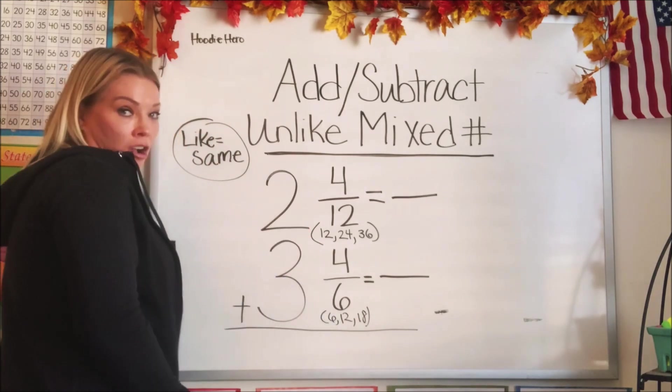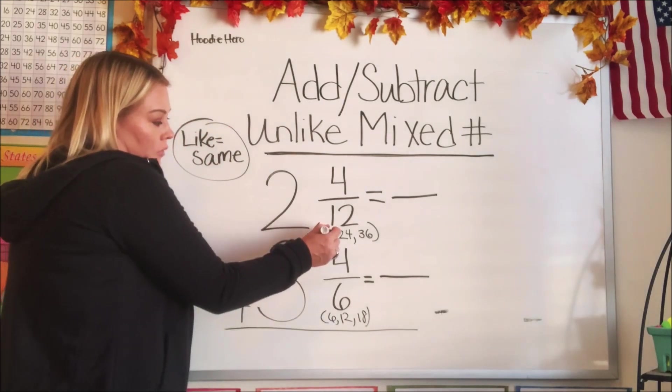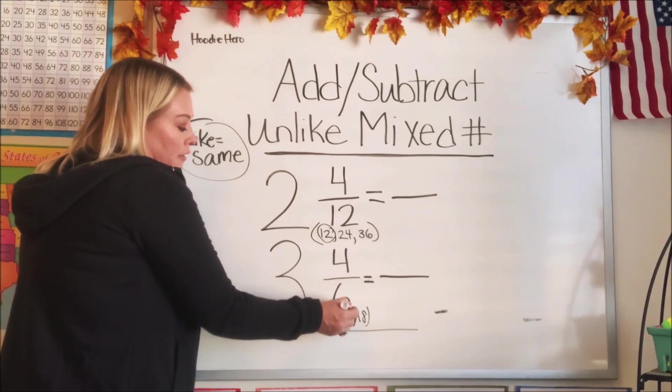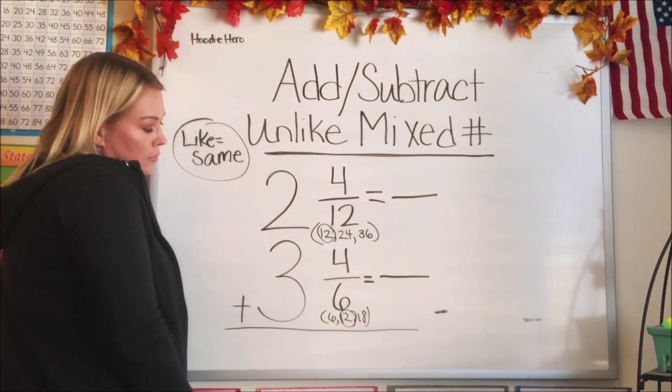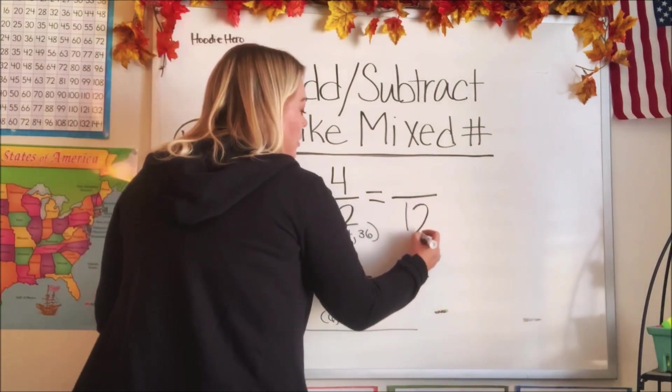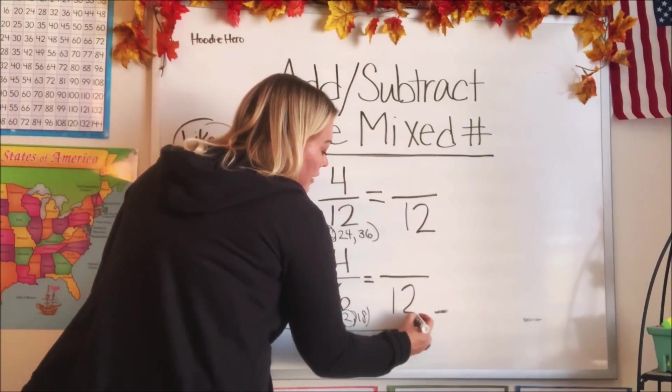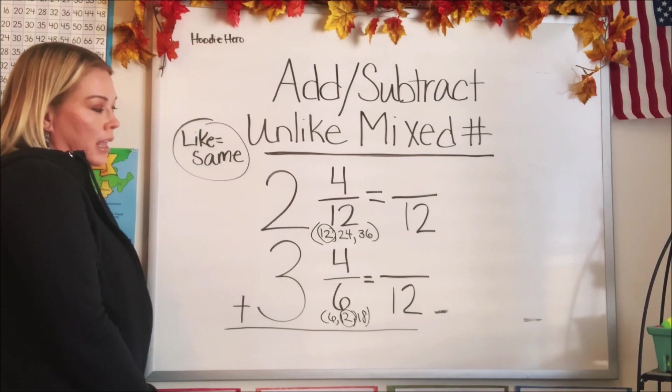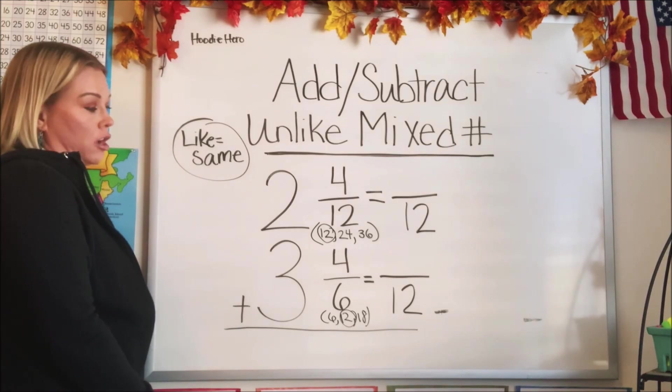Do we have a common multiple? We do. We have 12. That is our least common multiple. So we are going to make that our new denominator. Let's go ahead and put the 12 over.